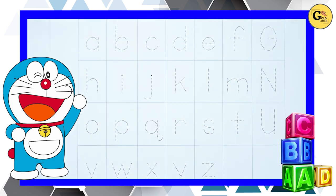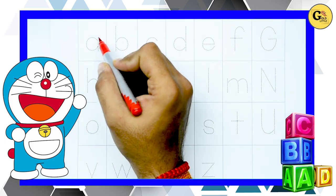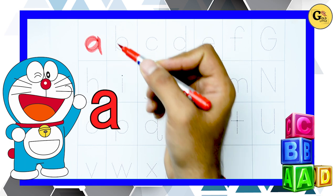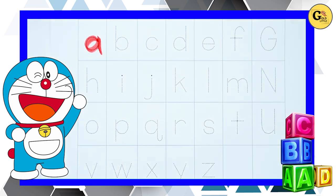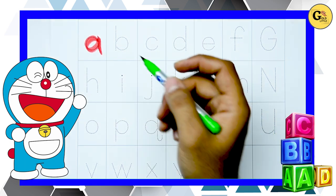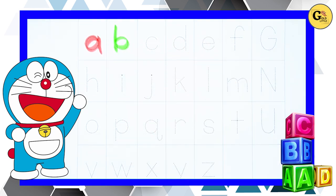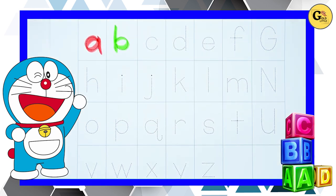A, small a with red color, it's a. B, b with green color, it's b, small b.